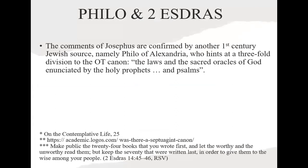There's another first-century Jew whose writings we have — Philo of Alexandria — who also lived around the time of Jesus. In his writings he hints at a threefold division of the Old Testament canon: the laws, the sacred oracles of God communicated by the holy prophets, and the Psalms. Very similar to what we see in the New Testament — the law, the prophets, and the Psalms — or as Jews today say: the law, the prophets, and the writings.